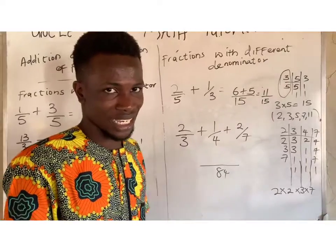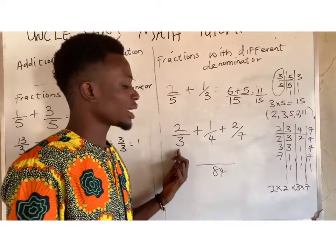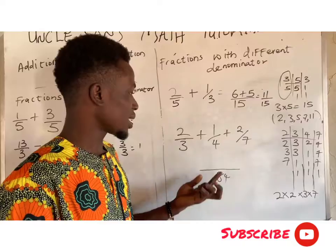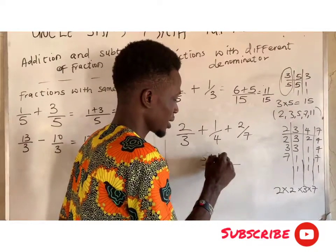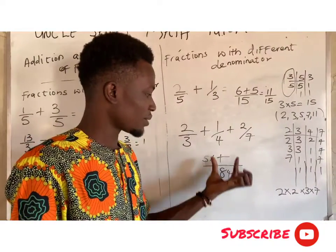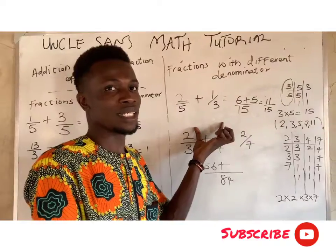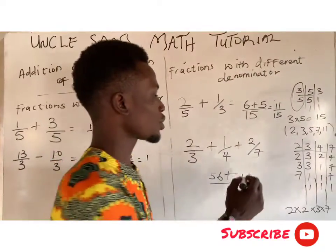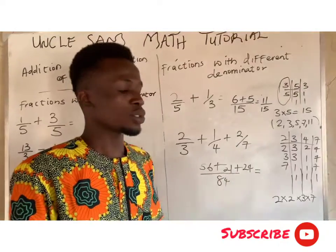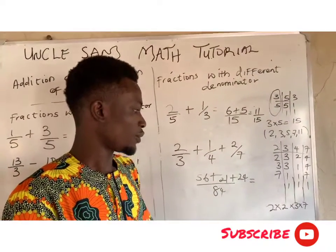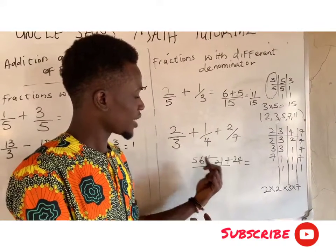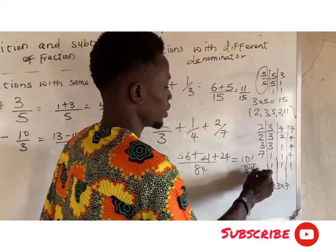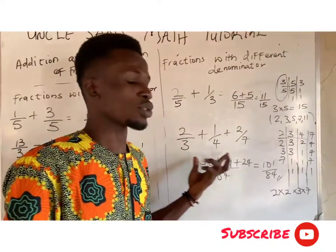So 84 divided by 3 gives us 28, and 28 times 2 is 56. Then 84 divided by 4 gives us 21, and 21 times 1 is 21. Plus 84 divided by 7 gives us 12, and 12 times 2 is 24. Adding these together: 21 plus 24 is 45, and 45 plus 56 is 101. So the answer is 101 over 84. This is the solution for adding fractions with different denominators.